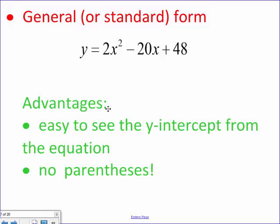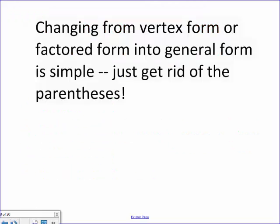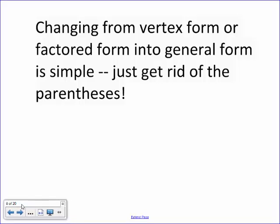And lastly, general or standard form? Well, we kind of looked at that. It's easy to see the y-intercept because how do you find the y-intercept? Well, you plug in 0 for x. So if I plugged in 0 here and 0 here, those would be gone. And what's my y-intercept? Positive 48. It's nice and easy to see. So make sure all the parentheses are gone for that general and standard form. And changing from vertex and factored form are nice and easy. All you got to do is just get rid of the parentheses. It might take a little bit of work. You might have to distribute and be careful of our perfect square trinomials, which we'll look at in a little while.